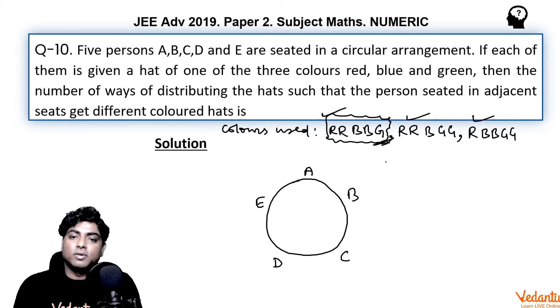G is going to any one of these five persons - A, B, C, D, or E. So there are five choices for green colored hat. It goes either to A or to B or to C or to D or to E.